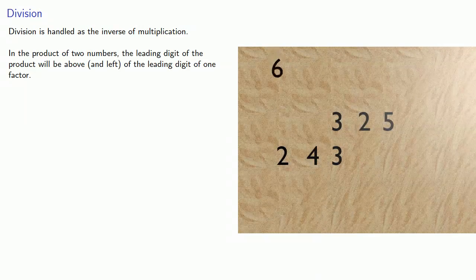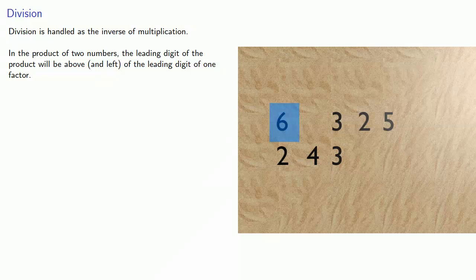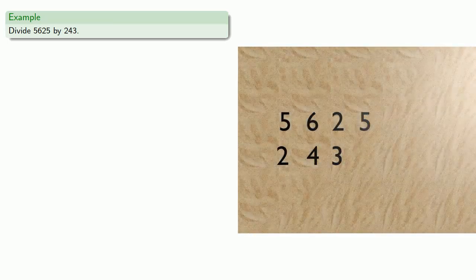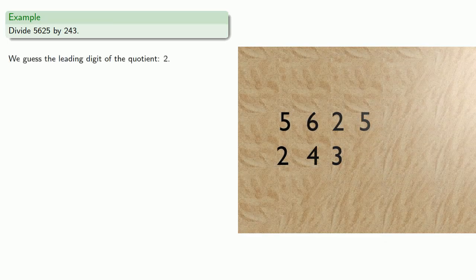Division is handled as the inverse of multiplication. And note that in the product of two numbers, the leading digit of the product will be above and left of the leading digit of one factor. So our setup will set the leading digit of the divisor above the leading digit of the divisor. So let's divide 5625 by 243. Again, Ibn Laban really likes this number, 5625. So we guess the leading digit of the quotient, 2.